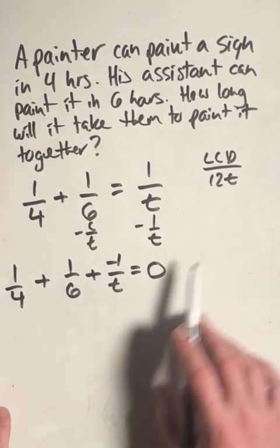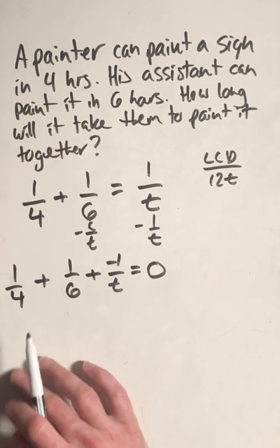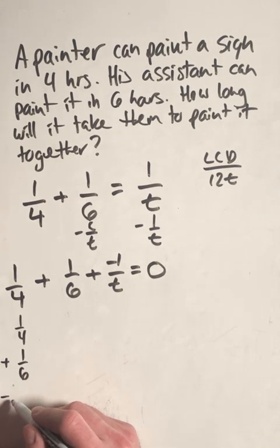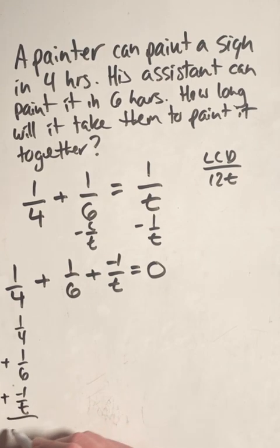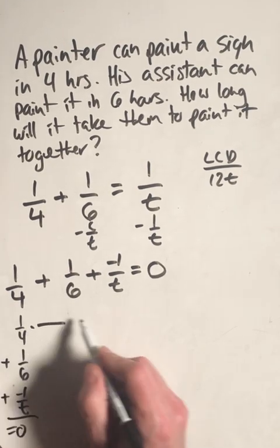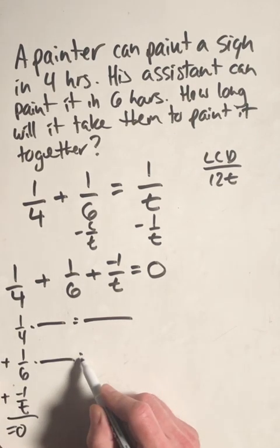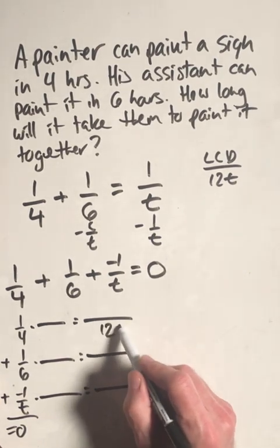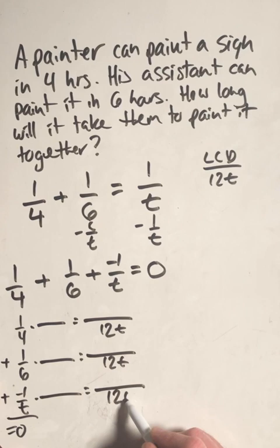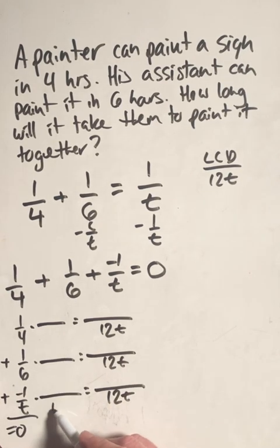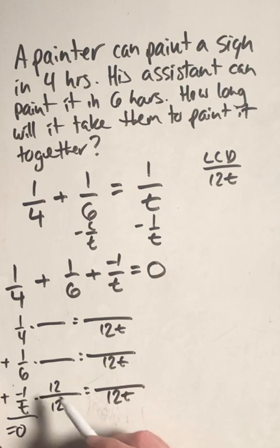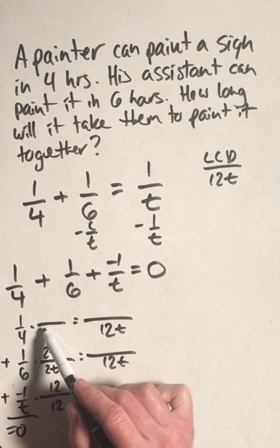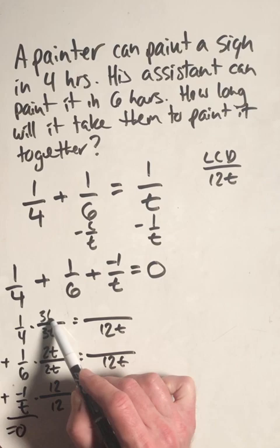Now we need to re-express everything using our lowest common denominator. So a good way to do that is to go vertically. So we have one fourth plus one sixth plus negative one over t, and that's all going to equal zero. And we have to multiply each of these by a fraction to equal another fraction with our common denominator, and our common denominator is going to be 12t. So t goes into 12t 12 times, this needs to be then 12 over 12. Six goes into 12t 2t times, so this needs to be 2t over 2t. And 4 goes into 12t 3t times, so this needs to be 3t over 3t.